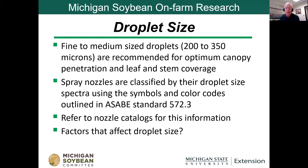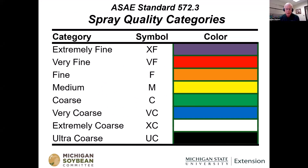Every nozzle catalog has charts that talk about the droplet size for their nozzles. Factors that affect droplet size include pressure and nozzle selection. This chart shows how the spectra is qualified in catalogs by color, going from extremely fine all the way to ultra coarse. Please don't confuse these with the color of the nozzle body because they're not correlated. When looking at charts, you really want to be in that yellow to orange category — the medium to fine category, more precisely the fine end of the medium.